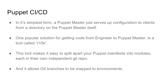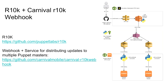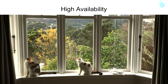We've built a reference implementation called 'carnival-r10k-webhook' that uses SNS and SQS to distribute config across multiple Puppet masters, because ideally you'll have more than one. There are other ways of doing this — it could be as simple as an NFS volume with your Git repo hosted directly on the servers, depending on your preferred architecture.